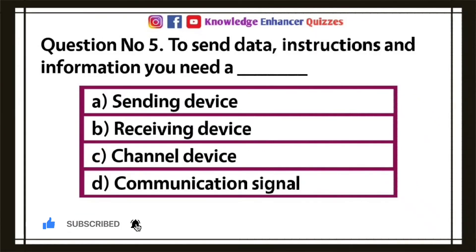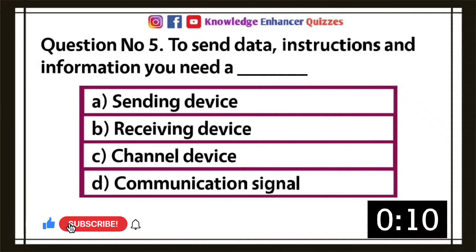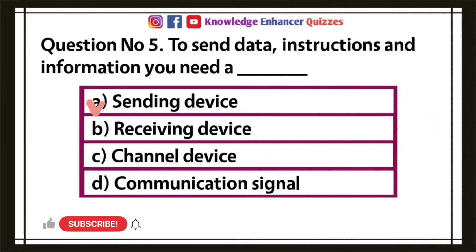Question number five, to send data, instructions and information you need a: A, sending device; B, receiving device; C, channel device; D, communication signal. Option A is the right answer.